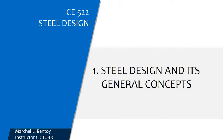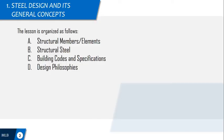This is our first topic in steel design. We will deal with the general concepts of steel and design of steel in structural design. The lesson is organized as follows: first we will deal with structural members or elements, some sort of review about structural members and elements, the structural steel, the building codes and specifications used in the design of steel structural members, and the design philosophies to be utilized in design.